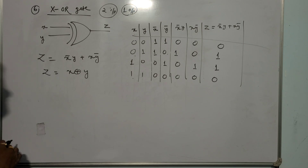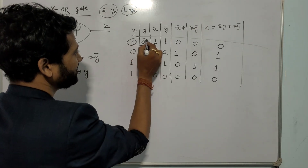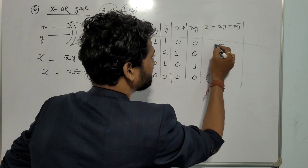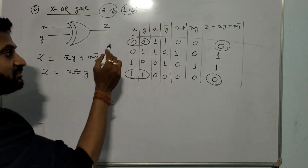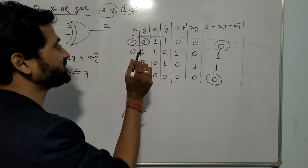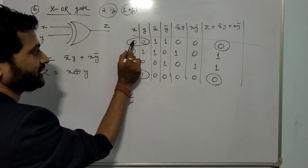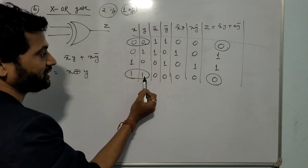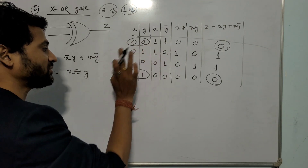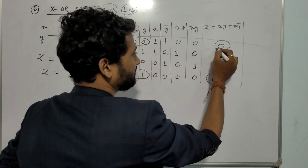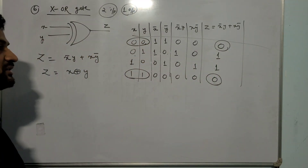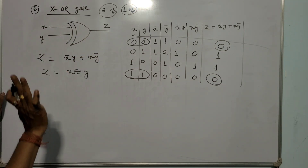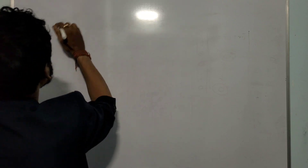From the XOR truth table we conclude: if both inputs are of the same nature - both 0 or both 1 - the output will be 0. If inputs X and Y are both 0, output is 0; if both are 1, output is also 0. That is the XOR gate.